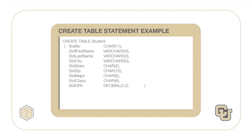Now let's look at the CREATE TABLE statement for the student table. For each column, the column name and data type are specified. Data types indicate the kind of data — character, numeric, and so on — and permissible operations, such as numeric operations and string operations such as subset, for the column.